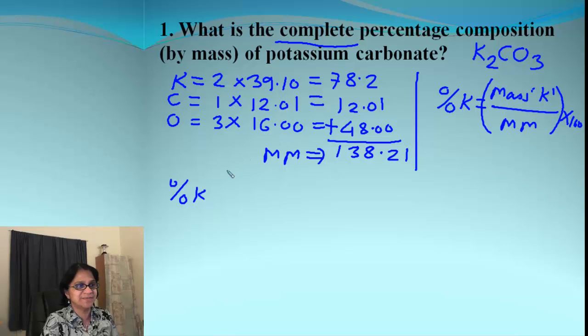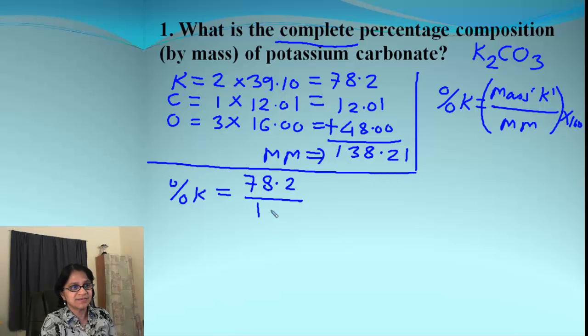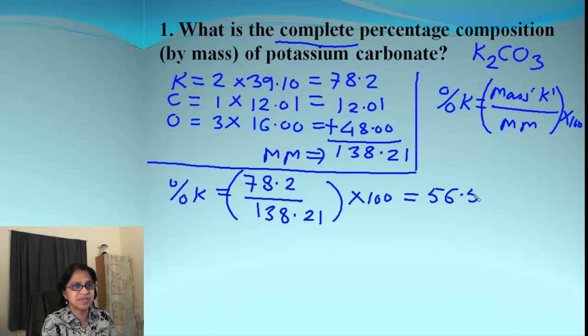So we keep on working on each element in the same manner. So let's do that calculation here. This is percent potassium. And the total mass due to potassium is 78.2 divided by the molar mass for potassium carbonate, which is 138.21 and that times 100. And when we simplify, what we get is 56.58%. So that's all potassium.